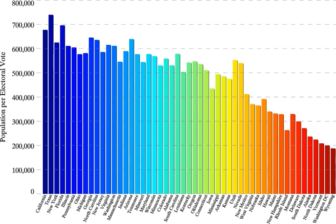Rhode Island entered the compact on July 12, 2013, with Governor Lincoln Chafee's signature. On April 15, 2014, New York entered the compact with a bipartisan vote in the NY Assembly and Governor Andrew Cuomo's signature. On May 24, 2018, Connecticut entered the compact with a bipartisan vote in the CT Senate and Governor Daniel Malloy's signature.